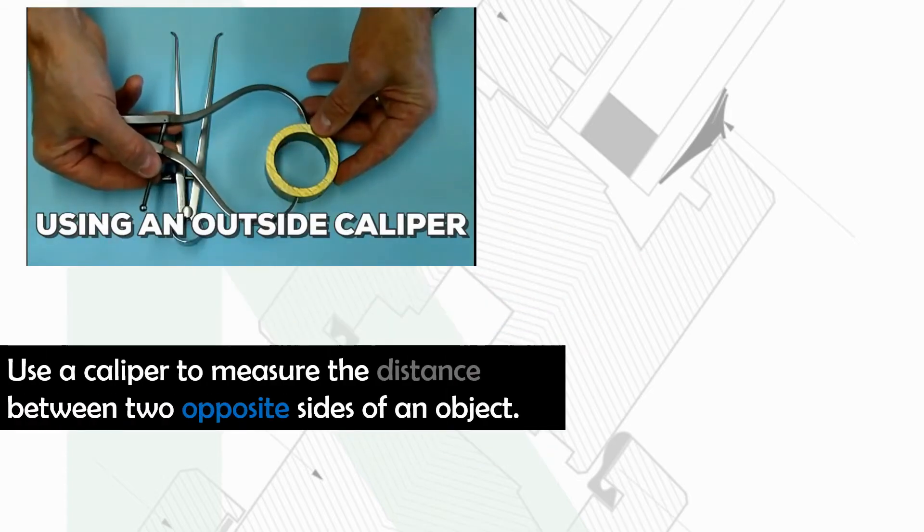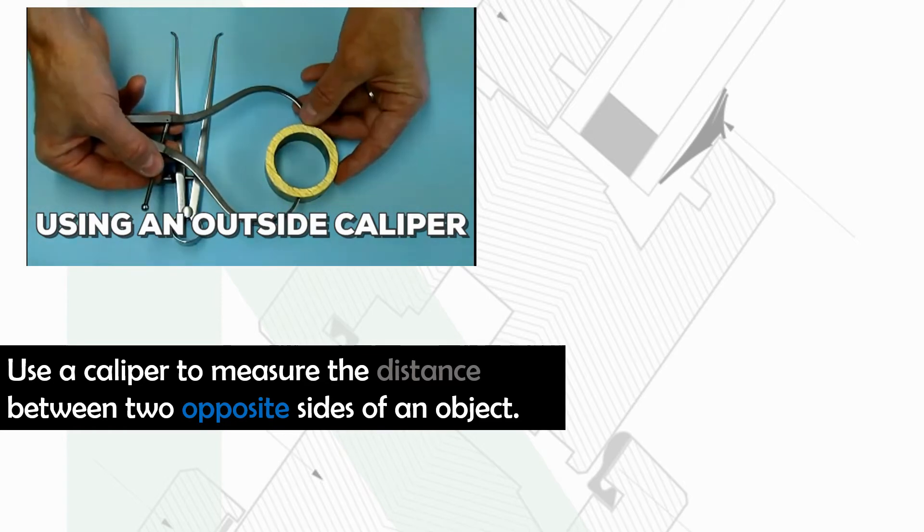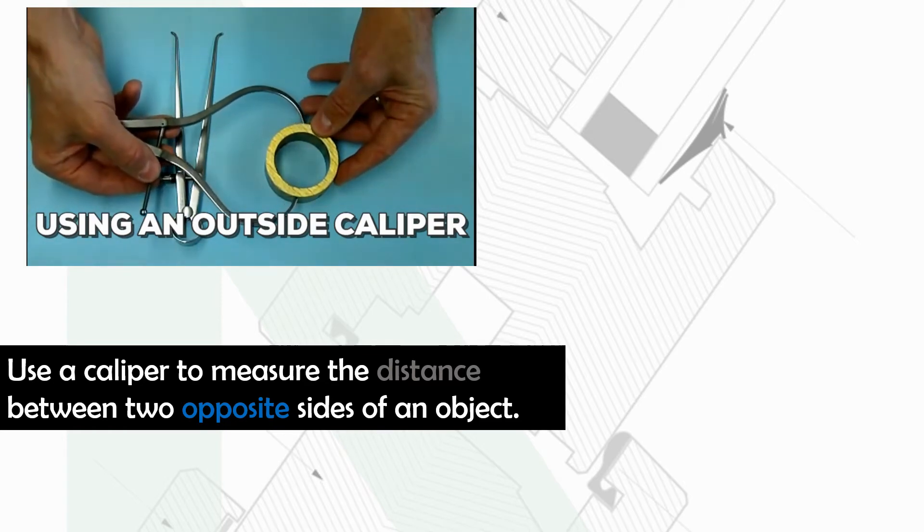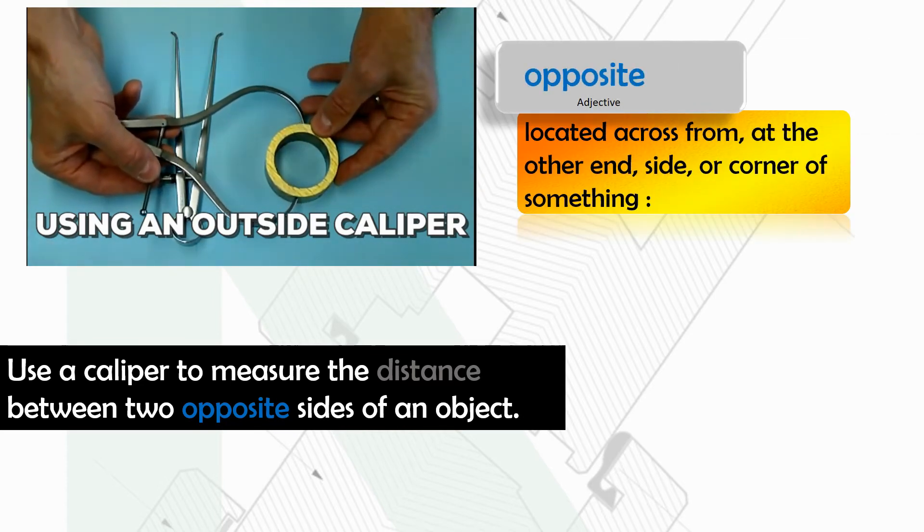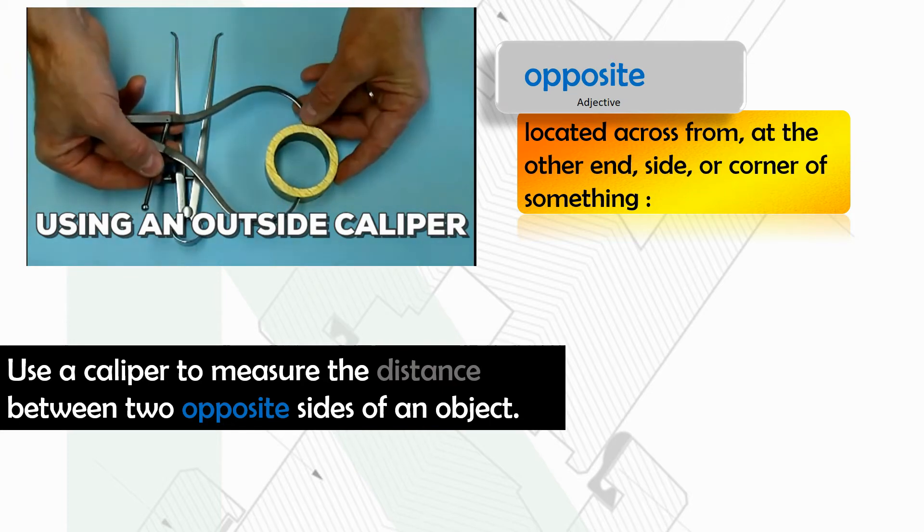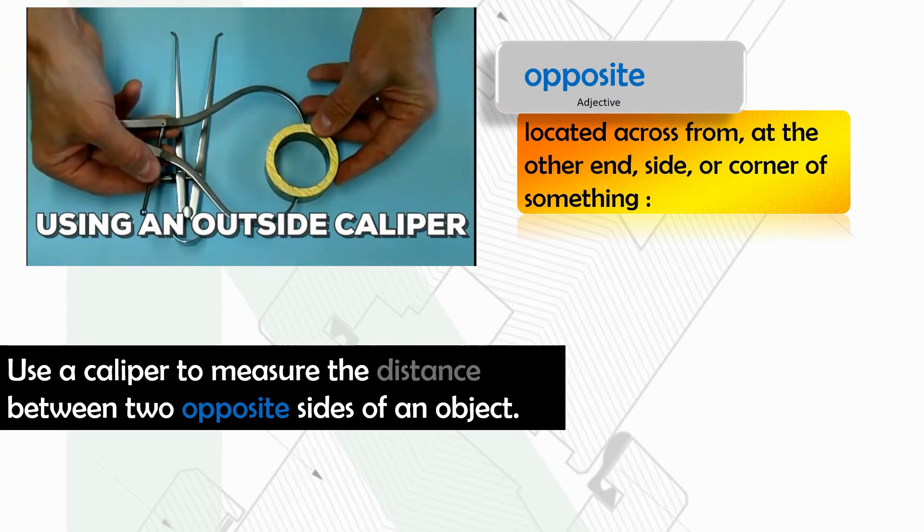Calipers. We use a caliper to measure the distance between two opposite sides of an object. Opposite is located across from, at the other end, on the other side or corner of something.